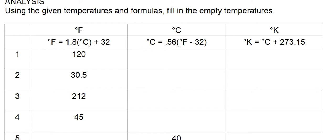We'll be using three different formulas. To figure out Fahrenheit, you multiply 1.8 times degrees Celsius plus 32. To figure out Centigrade, you take 0.56 and multiply it by degrees Fahrenheit minus 32. And for Kelvin, you take degrees Centigrade and add 273.15.